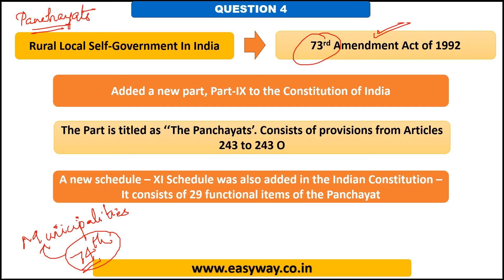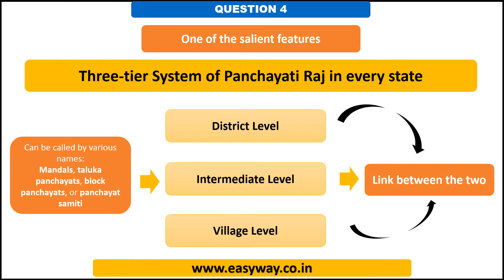With the 73rd Amendment Act of 1992, a new Part 9 was added to the constitution, titled Panchayats, consisting of provisions from Articles 243 to 243O. It also added a new schedule — the 11th Schedule. The 73rd Amendment Act 1992 brought in a three-tier system of Panchayati Raj that needs to exist in every state. The three tiers are rural government at the level of village, intermediate level, and district level.